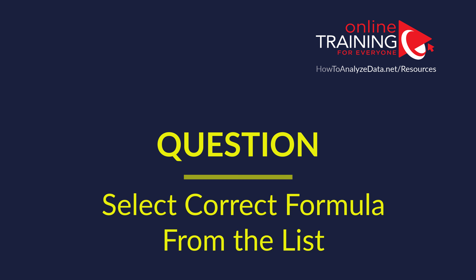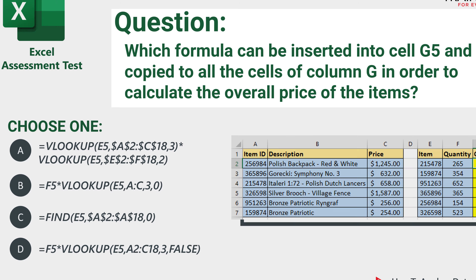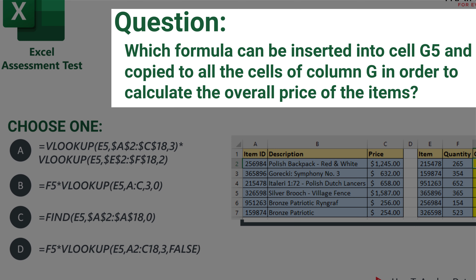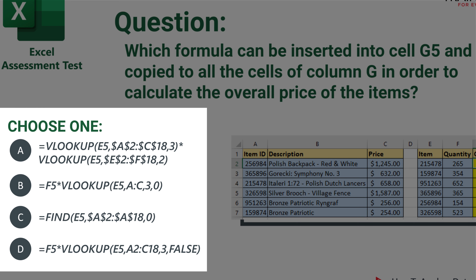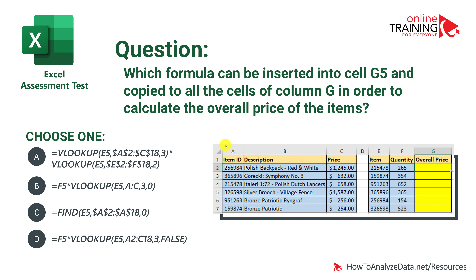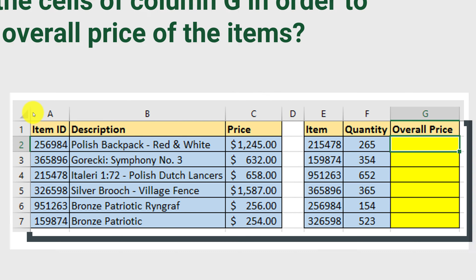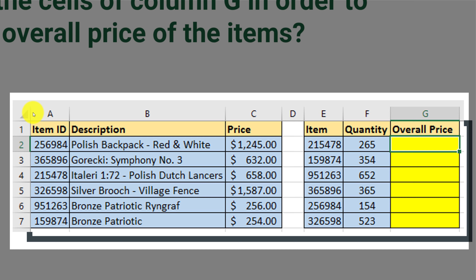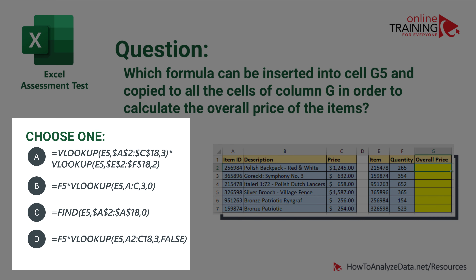Now let's look at a tricky question — which Excel test is without VLOOKUP? Which formula can be inserted into cell G5 and copied to all cells in column G to calculate the overall price of items? Four choices are presented: two use VLOOKUP with slight variations, one uses double VLOOKUP, and Choice C uses the FIND function. A data snapshot from Excel is provided so you can visually see the references. Which one is the right answer?